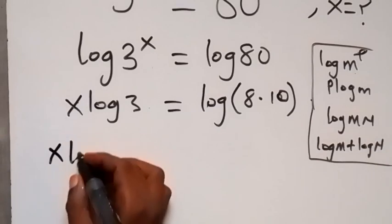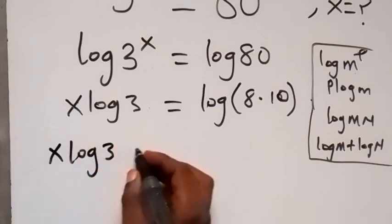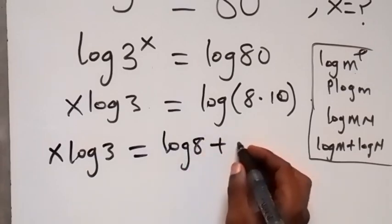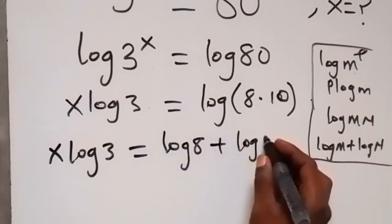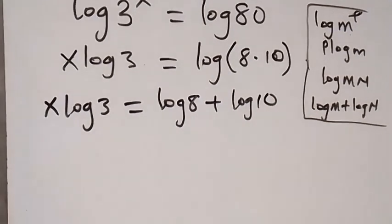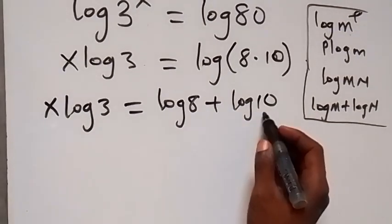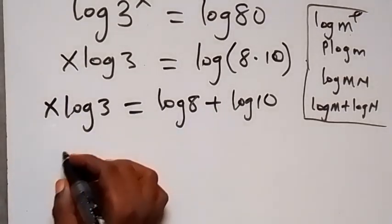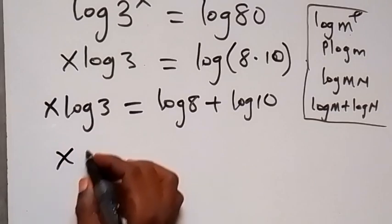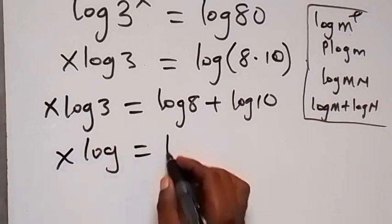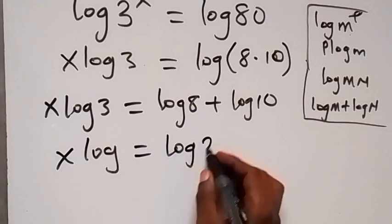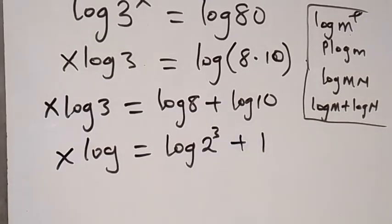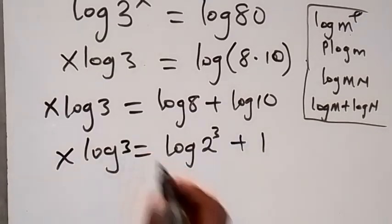When we apply this law, x log 3 will now equal log 8 plus log 10. Log 10 is 1, and we can express 8 as 2 raised to power 3. So x log 3 now equals log 2 raised to power 3 plus 1.